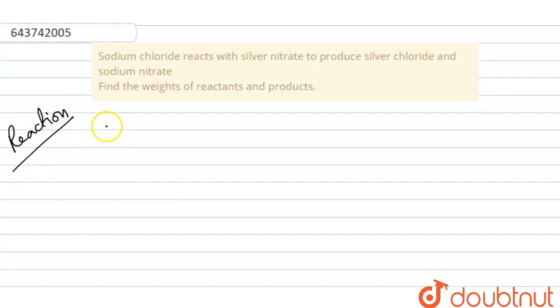First we have to write the reaction for that: NaCl reacts with AgNO3 to form AgCl and NaNO3. This is the reaction that is given. We have to find the weights of the reactants and products.